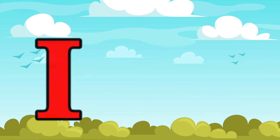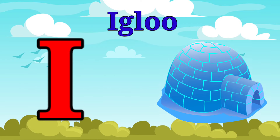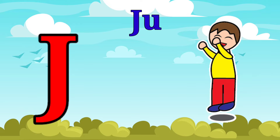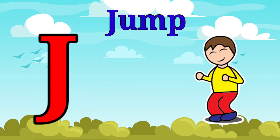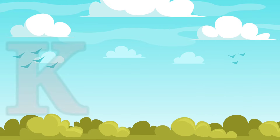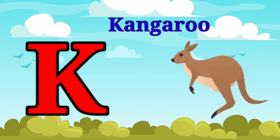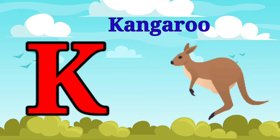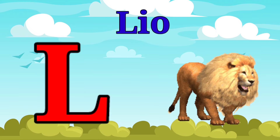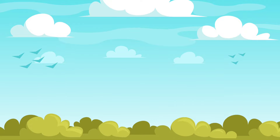I is for igloo, i-i-igloo. J is for jump, j-j-jump. K is for kangaroo, k-k-kangaroo. L is for lion, l-l-lion.